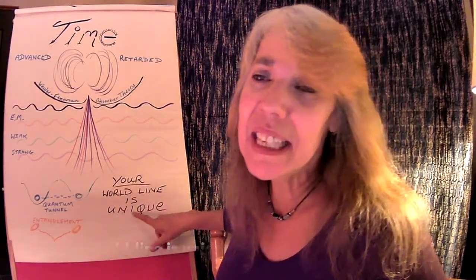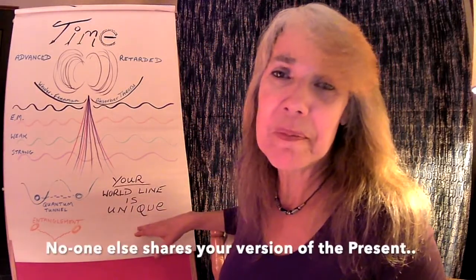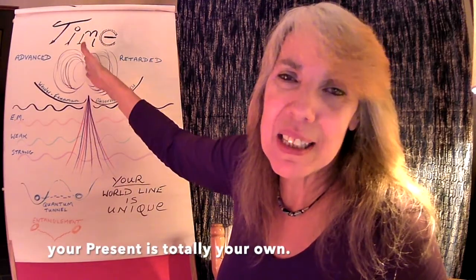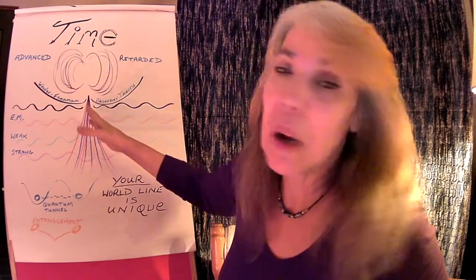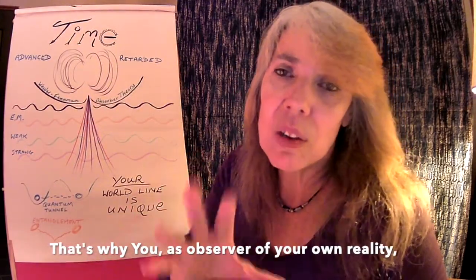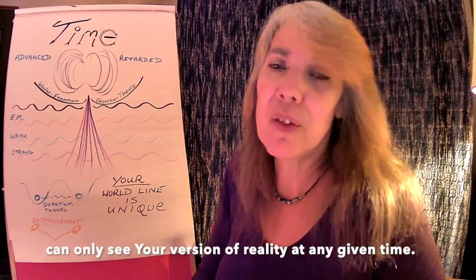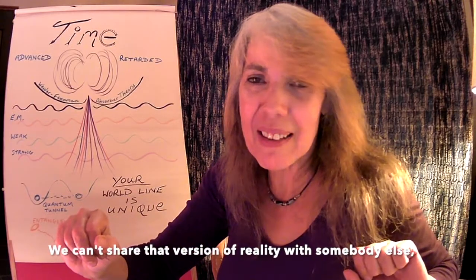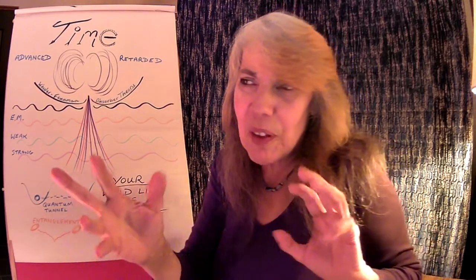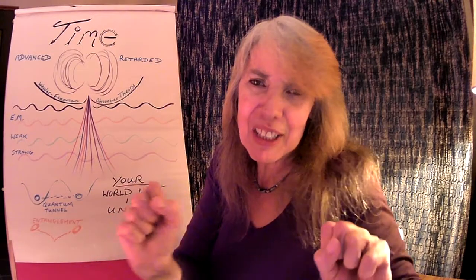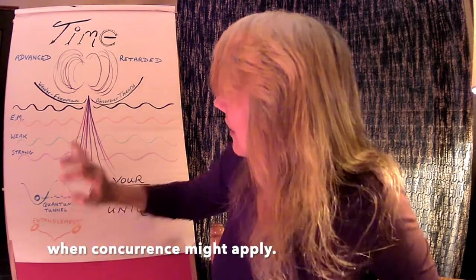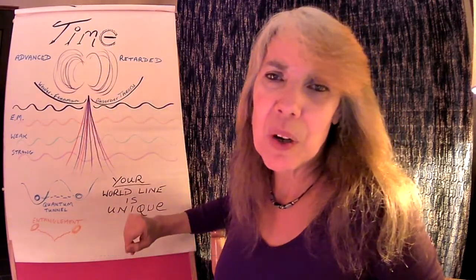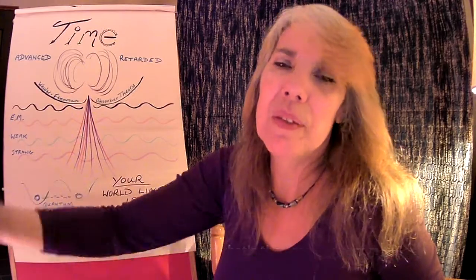Your world line is unique — it's unique to you. No one else shares your world line. Your version of the present is unique to you. So that's why you, as the observer of your reality, can only see your version of reality at any given time. You can't share that version of reality with somebody else, except for those little entangled moments when you might be able to snatch it here and there. But on a general scheme of things, you've got your own singular viewpoint to work with, and that's the case at every moment that we live through.